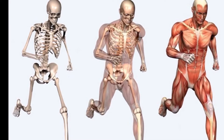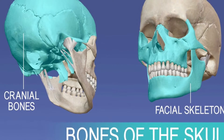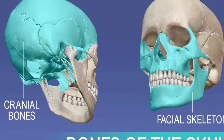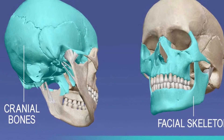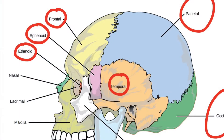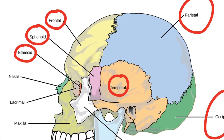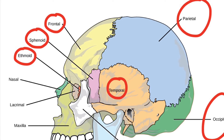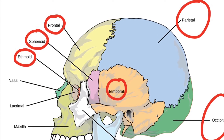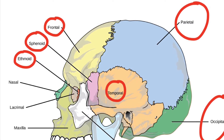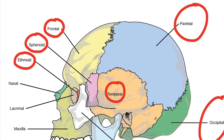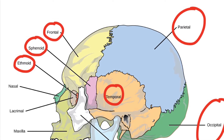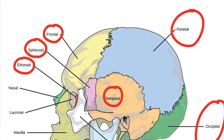Starting with the skeletal system, at the top we have our skull, broken into two categories: our cranial bones and our facial skeleton. Our cranial bones are our reference points — areas on the head that change shape and affect how the hair moves and lays. From the frontal bone, the occipital, the parietal, and the temporal. The ethmoid is a spongy bone on the inner eye socket and helps form the nasal cavities. The sphenoid is a wing-like bone that connects all the bones of the cranium together — think of it as that last puzzle piece.